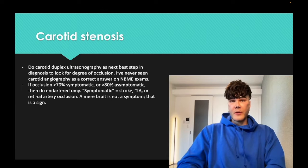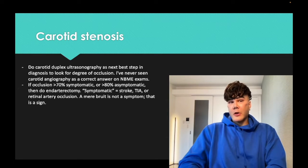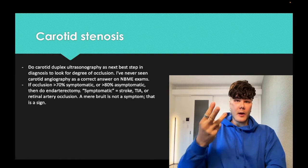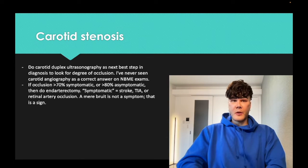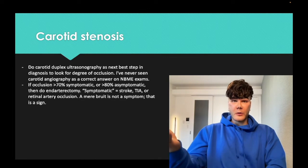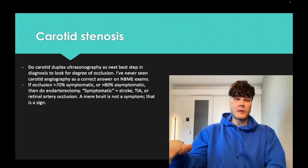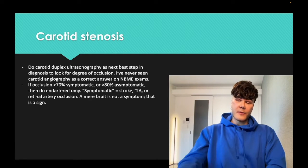Guidelines have shifted over the years for endarterectomy cutoffs, but USMLE doesn't really test that nuance. You can learn that greater than 70% symptomatic or greater than 80% asymptomatic are the thresholds. Symptomatic means the patient has had a stroke, a TIA, or retinal artery occlusion. A bruit is a sign, not a symptom. Do endarterectomy if over those thresholds; if under, do medical management.